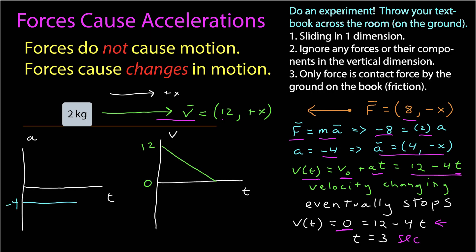Briefly, let's take a look at the graphical representation of that. Here's acceleration as a function of time and velocity as a function of time. The acceleration is constant, but the velocity decreases from 12 to 0. The changing velocity comes from the acceleration, and the acceleration comes from the force.